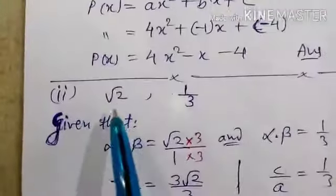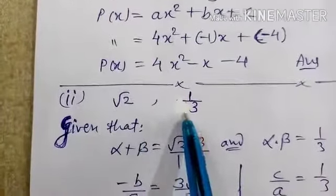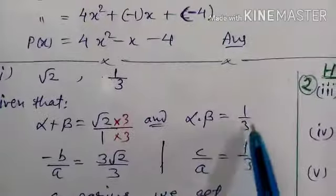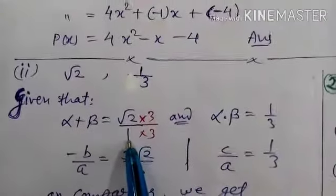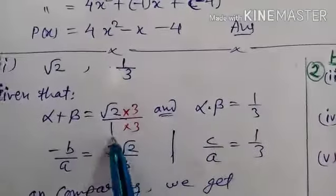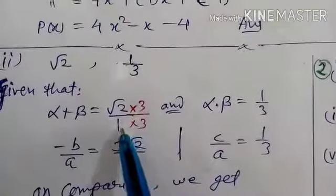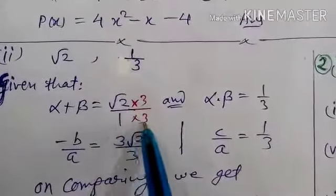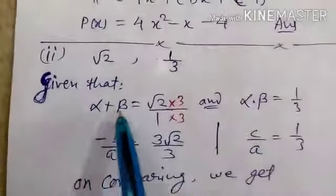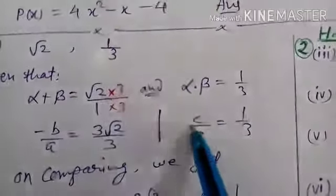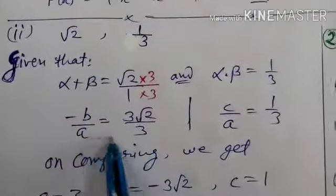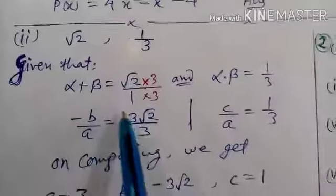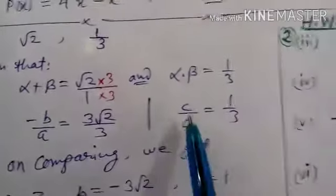Now the second part: sum of zeros is root 2 and product is 1/3. So alpha plus beta equals root 2 and alpha times beta equals 1/3. Write root 2 as root 2 over 1. Take the LCM of 1 and 3, which is 3, so make the denominator 3 by multiplying by 3 and dividing by 3 — you get 3 root 2 over 3 and 1 over 3. Write alpha plus beta as minus b by a and alpha times beta as c by a. Comparing both sides: a equals 3, minus b equals 3 root 2 so b equals minus 3 root 2, and c equals 1.